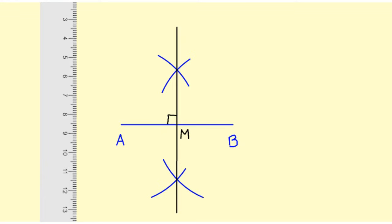So there you have the segment AB which has been bisected at point M, and the segment that I've drawn in black is also perpendicular to the segment AB.